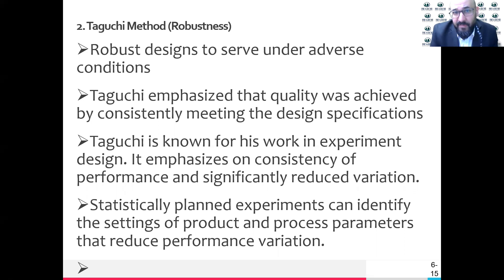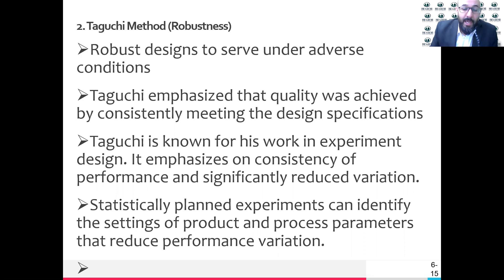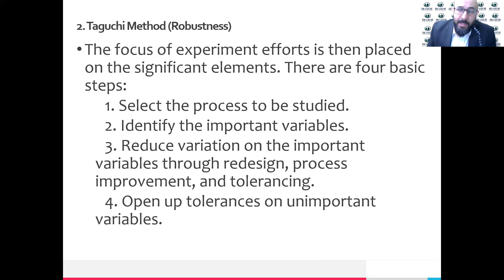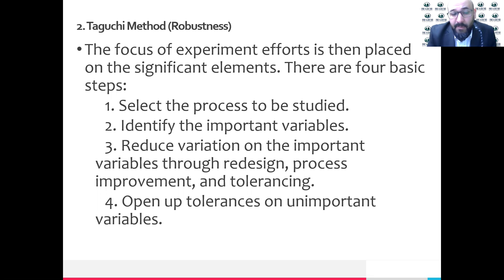The whole thing is removing the variation from the process. Variation is not good - we need consistency. He believed in consistency in design specification and consistency in performance. We could reach consistency by identifying the factors that will impact the outcome of the process. Taguchi said if you do the Design of Experiments (DOE), you have to follow four steps: first, select the process to be studied; second, identify the important variables; third, reduce the variation for important variables; fourth, open up tolerances for unimportant factors - if a factor is not important, it could be ignored.